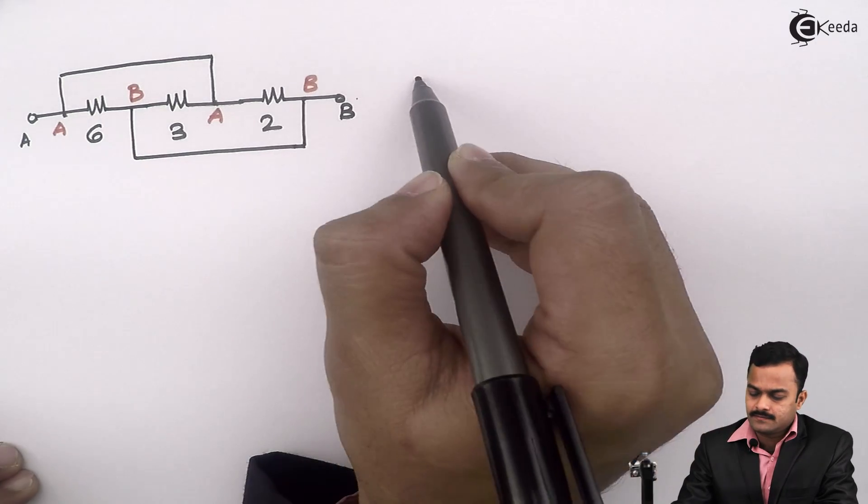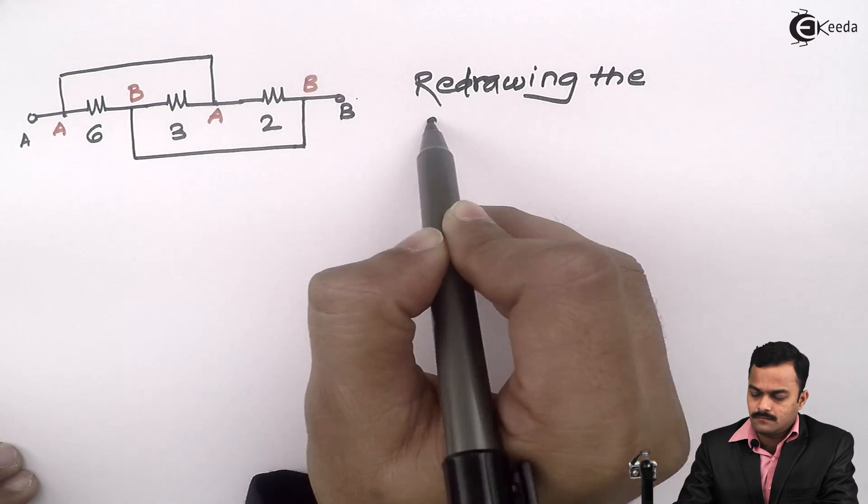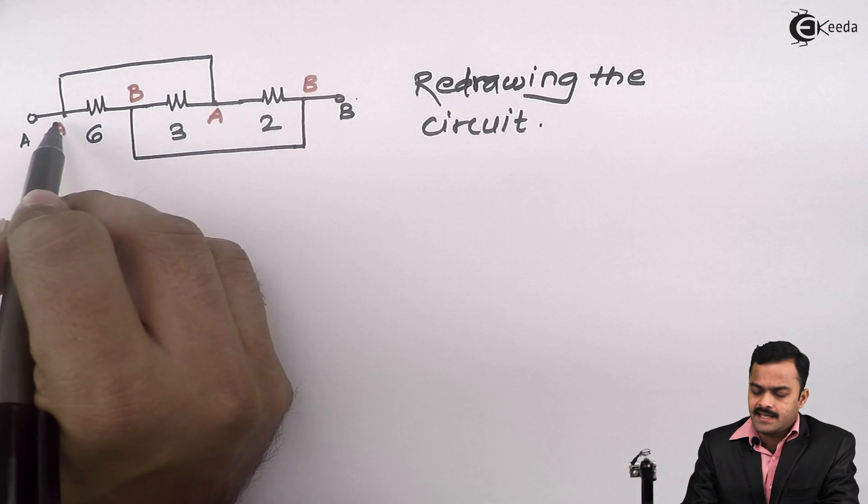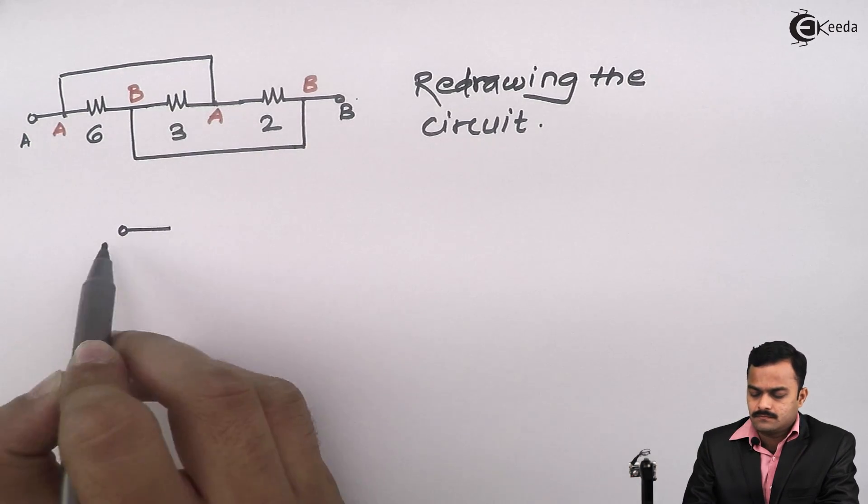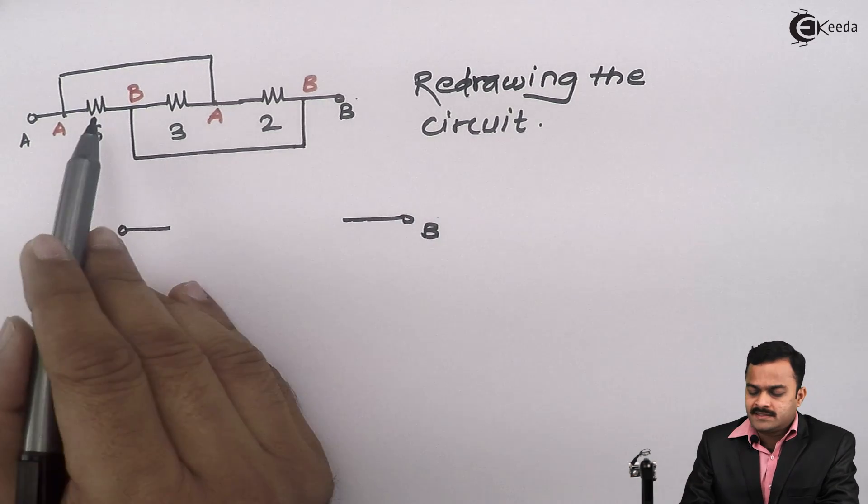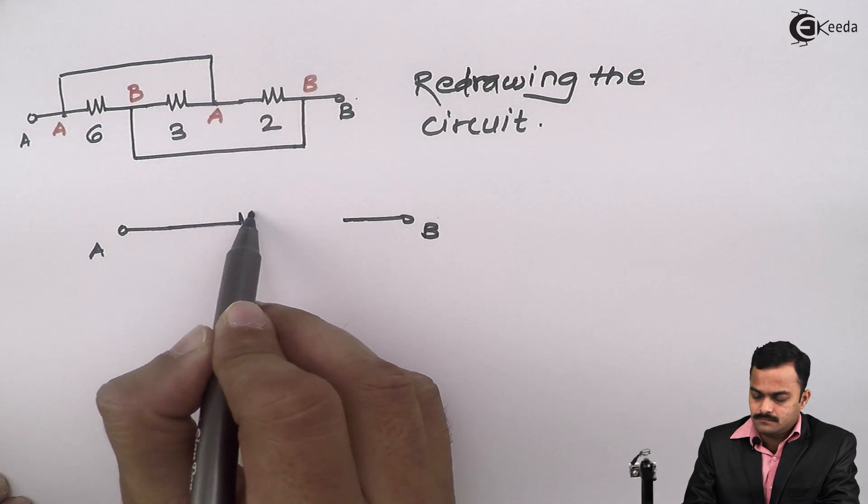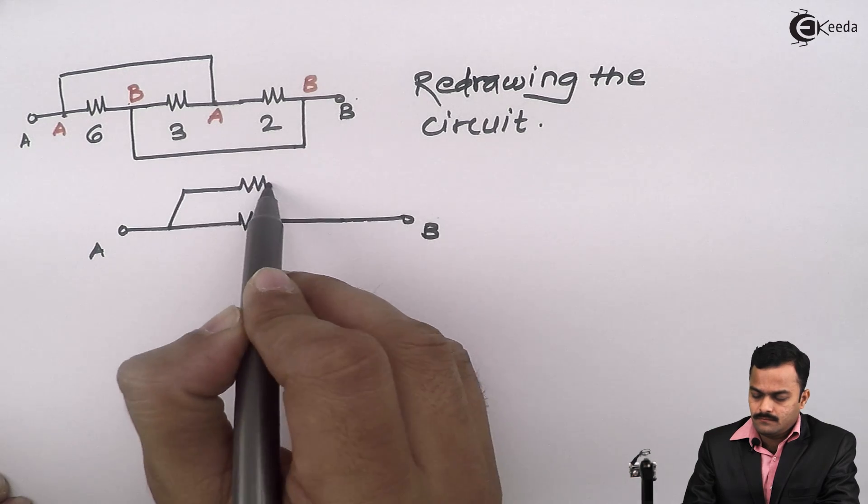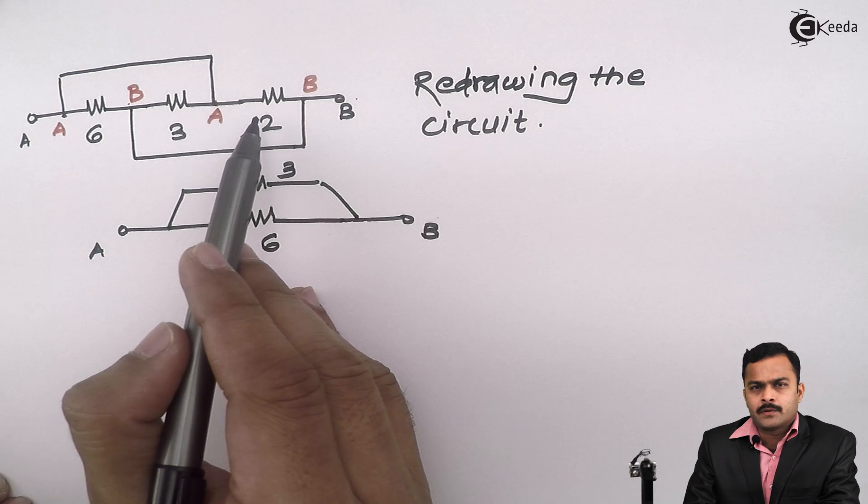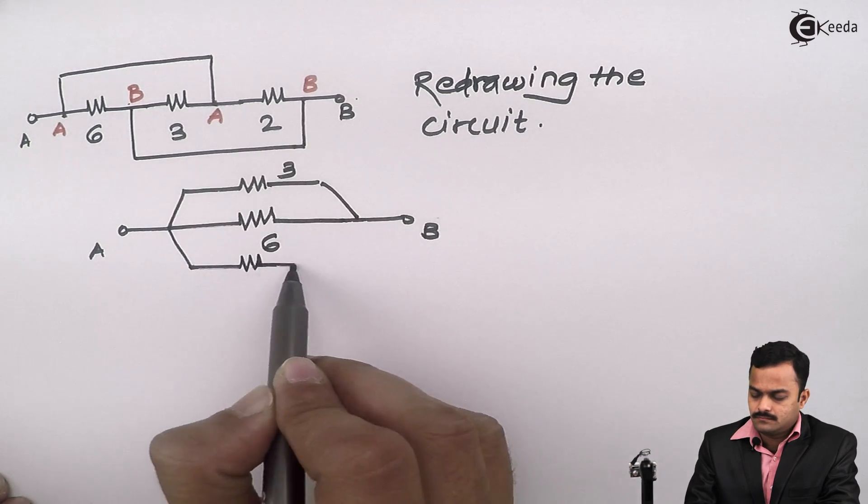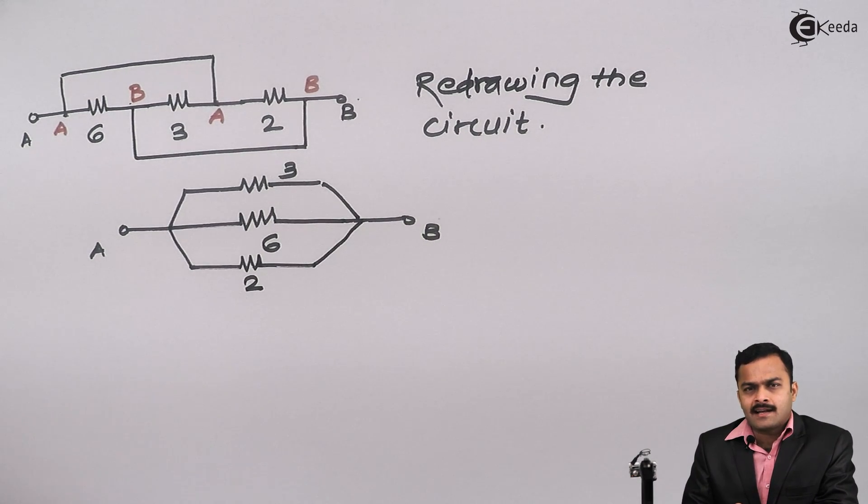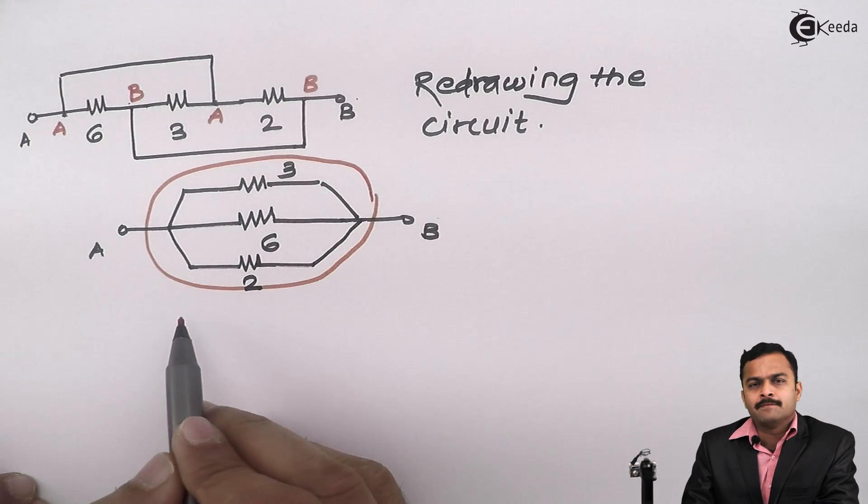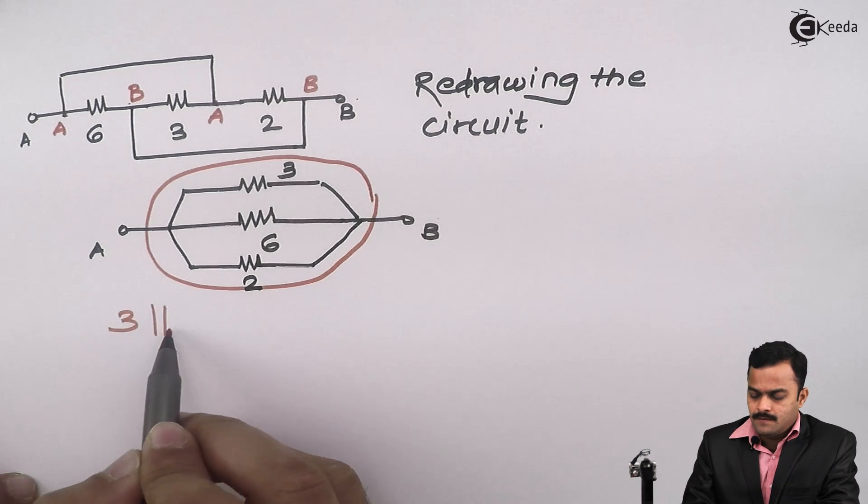So I redraw the circuit. More often this condition may occur. So if I redraw the circuit, I keep all the concepts intact. I can say A and B are the only two points present in the circuit. This 6 ohm connected between A and B, this 3 ohm connected between B and A, or you can say A and B. Two ohm connected between A and B. So keeping all the concepts intact, I just redraw the circuit. I'll get this circuit which is very simple now, because all of them are in parallel. So 3 parallel with 6 parallel with 2.